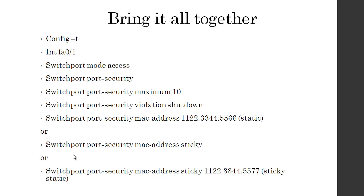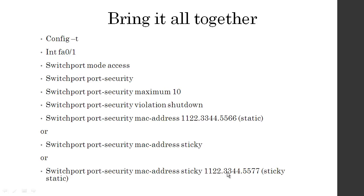To put it all together: config T, interface FA0/1, enter. Switch port mode access to make it an access port. Switch port port-security, enter. Switch port port-security maximum 10. Switch port port-security violation shutdown. Switch port port-security MAC-address (the static MAC address). Or switch port port-security MAC-address sticky. Or both — switch port port-security MAC-address sticky plus a static one on top. So it would sticky nine addresses and use one statically.